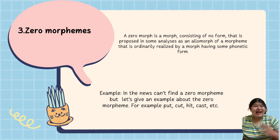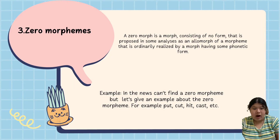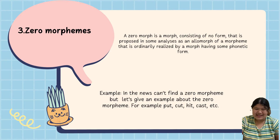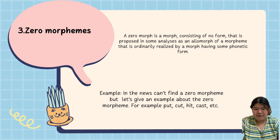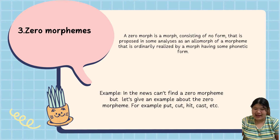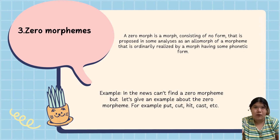Three: a zero morpheme is a morpheme consisting of no phonological form. That is, it is proposed in some analyses as an abstract morph of a morpheme that is ordinarily realized by a morph having some phonological form. You cannot easily find a zero morpheme, but examples include: food, cat, hit.